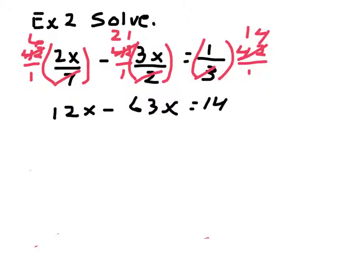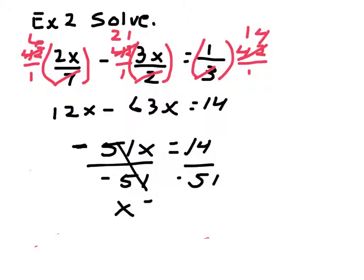12 minus 63 is a negative, let's see, 63 take away 12, 51x equals 14. Now, divide both sides by a negative 51. They cancel. I don't see anything that I can divide 14 and 51 by, so it's a negative 14, 51st. And we can just leave it like that.